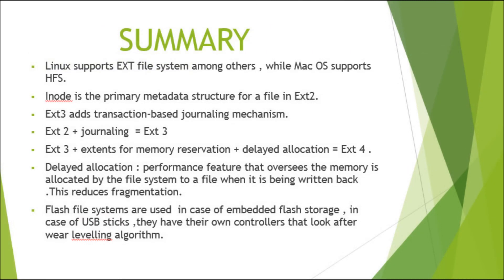Summary: Linux supports ext file systems among others, while macOS supports HFS. Inodes are the primary metadata structure for files in ext2. ext3 adds a transaction-based journaling mechanism — ext2 plus journaling equals ext3. ext4 adds memory reservation and delayed allocation — ext3 plus those features equals ext4. Delayed allocation is a performance feature that reduces fragmentation. Flash file systems are used for embedded flash storage and USB sticks, which have controllers managing wear leveling.